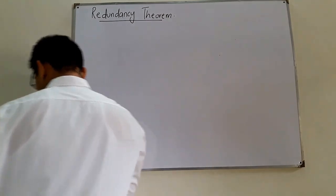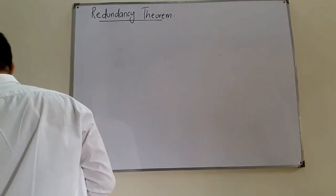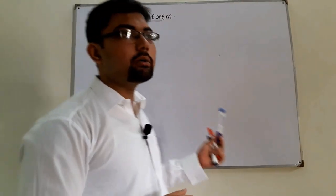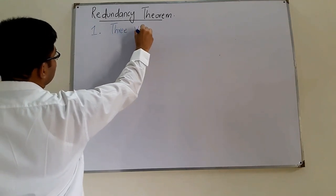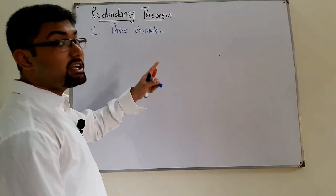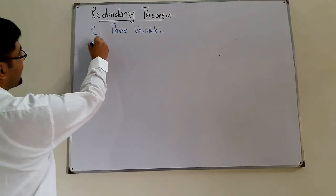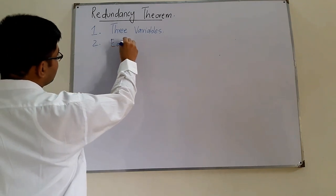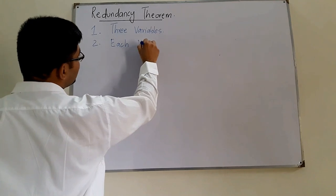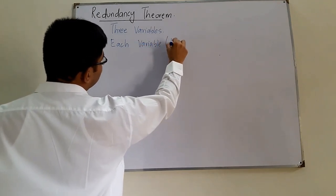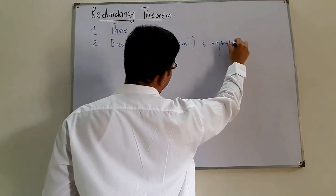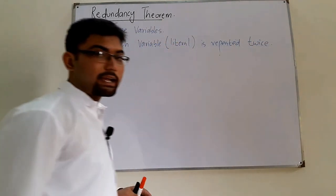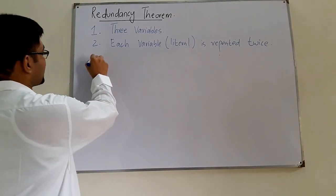For the Redundancy Theorem, we have some conditions that must be met. Condition one: your logic expression must contain three variables — this theorem applies to expressions of three variables. Condition two: each variable or each literal is repeated twice.